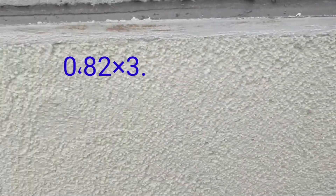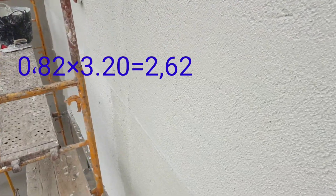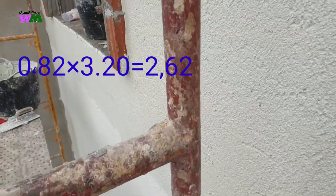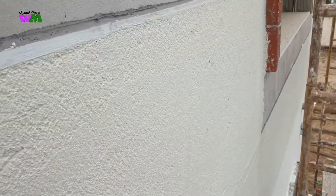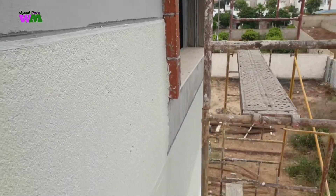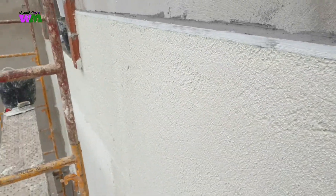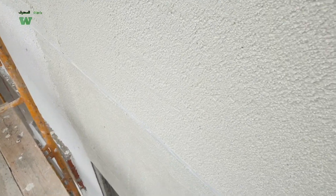إذن كما رأيتم، إذا قمنا بضرب 0.82 في 3.20 متر تعطينا النتيجة مترين و62 سنتمتر. هذا هو العدد المتوسط؛ في بعض الأحيان تصل إلى مترين و70 أو مترين و80، وفي بعض الأحيان تنزل إلى مترين و50 سنتمتر. هذا هو الفرق الذي يعطيه الحائط بين الخشن والرطب، وليس هناك فرق كبير.